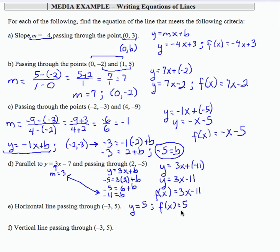Either one of those will work. The vertical line passing through (-3, 5), well that's going to be the line where every input is negative 3. I write that as x equals negative 3. There is no corresponding function notation because x equals negative 3 is not a function. So I'm just going to say no function notation.